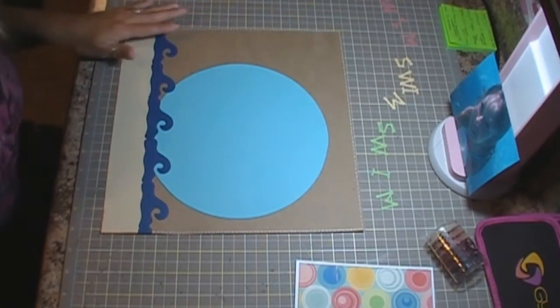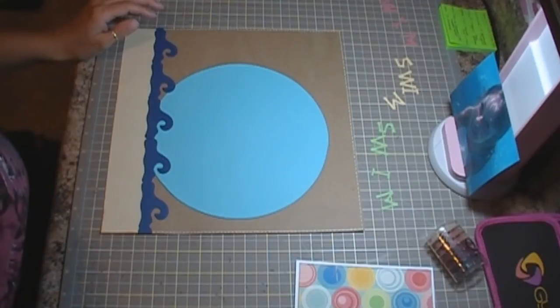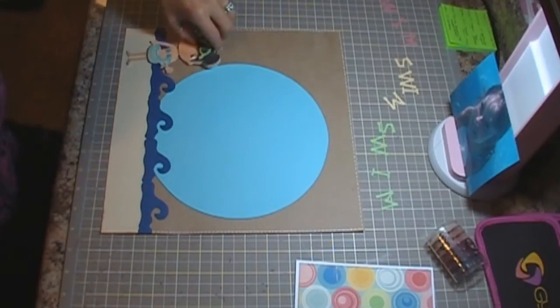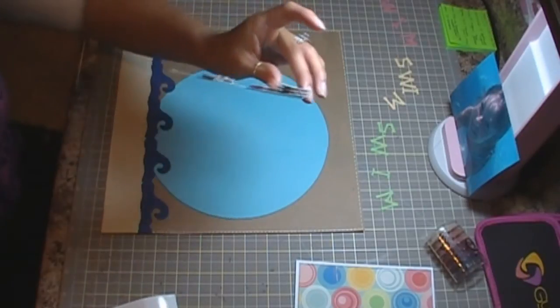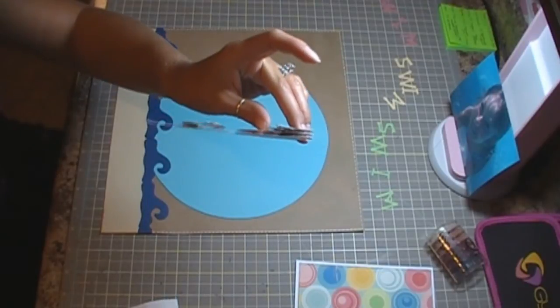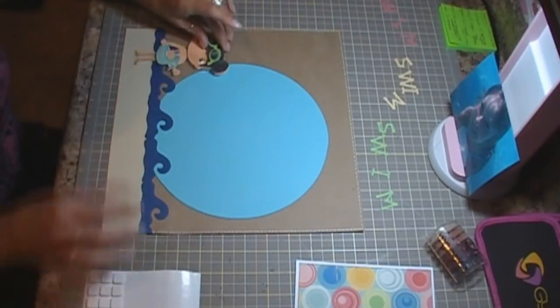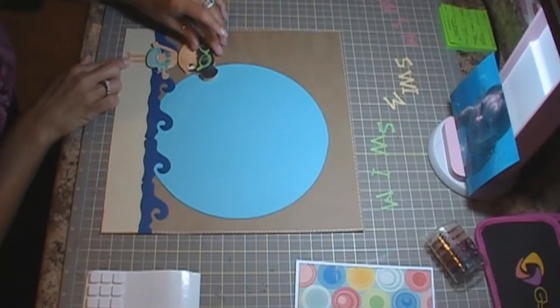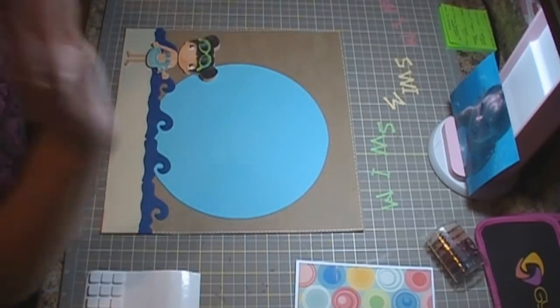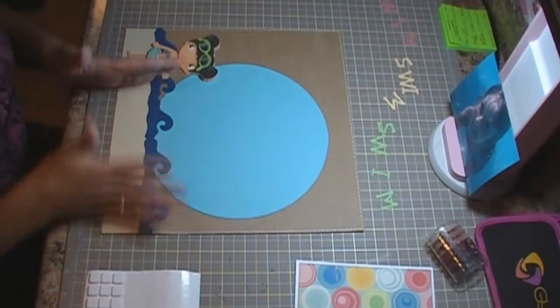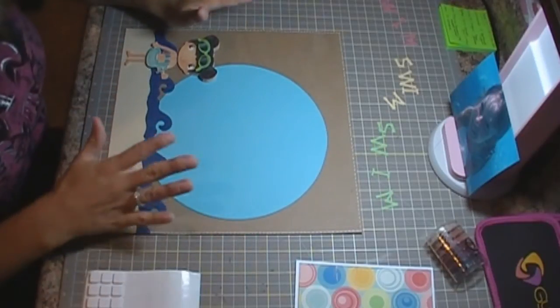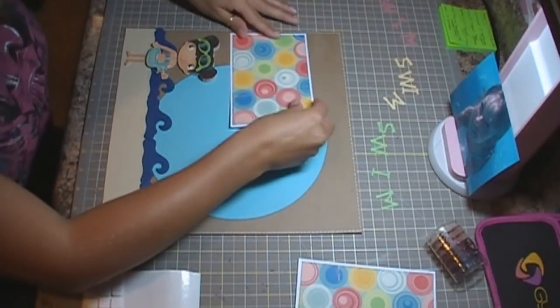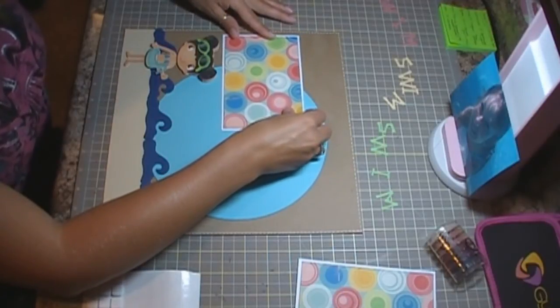So we have that. And then I did do the layers for my Swimmer Girl, as you can see. I just used some foam squares in between the layers. She's going to go right about here, like she's standing in the sand, and then the beach is behind her or whatever. But I want to put my photo mats on here first.